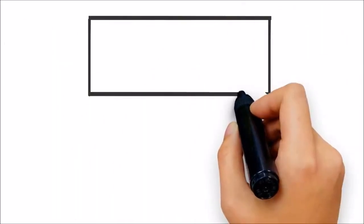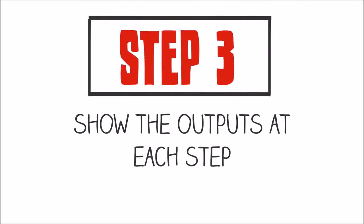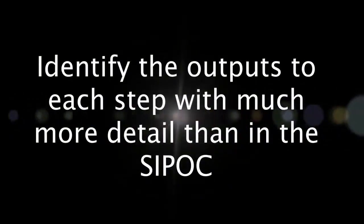Step 3: Show the outputs at each step. Here, you'll want to identify the desired outputs for each step in the process. Some of these outputs will become outputs of the entire process, while some become inputs to following process steps.